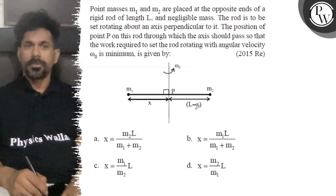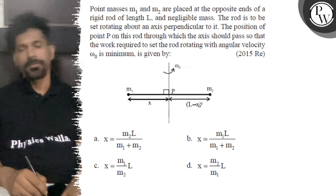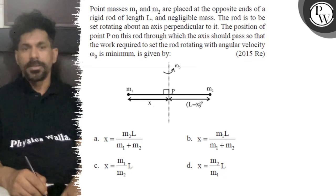The rod is to be set rotating about an axis perpendicular to it. The position of point P on this rod through which the axis should pass so that the work required to set the rod rotating with angular velocity omega 0 is minimum is given by.